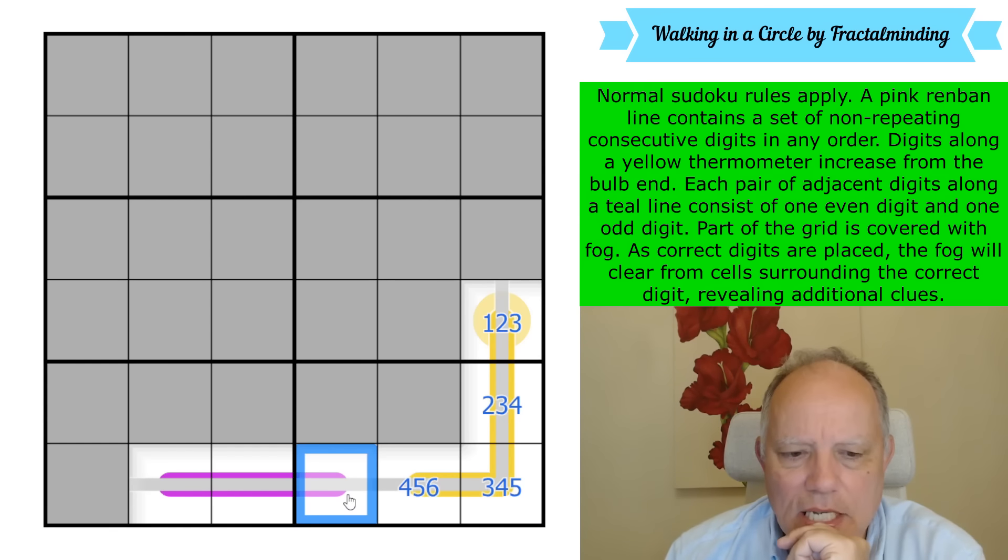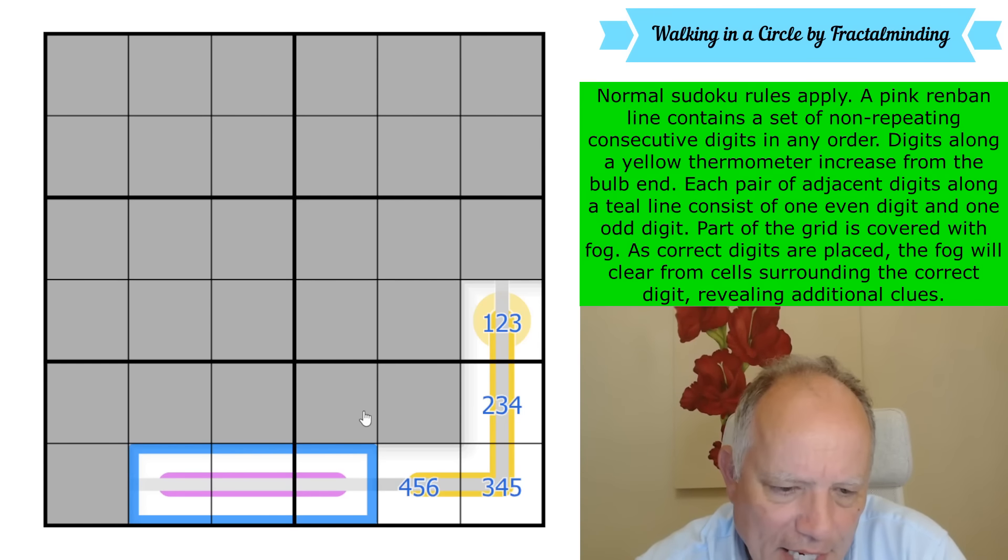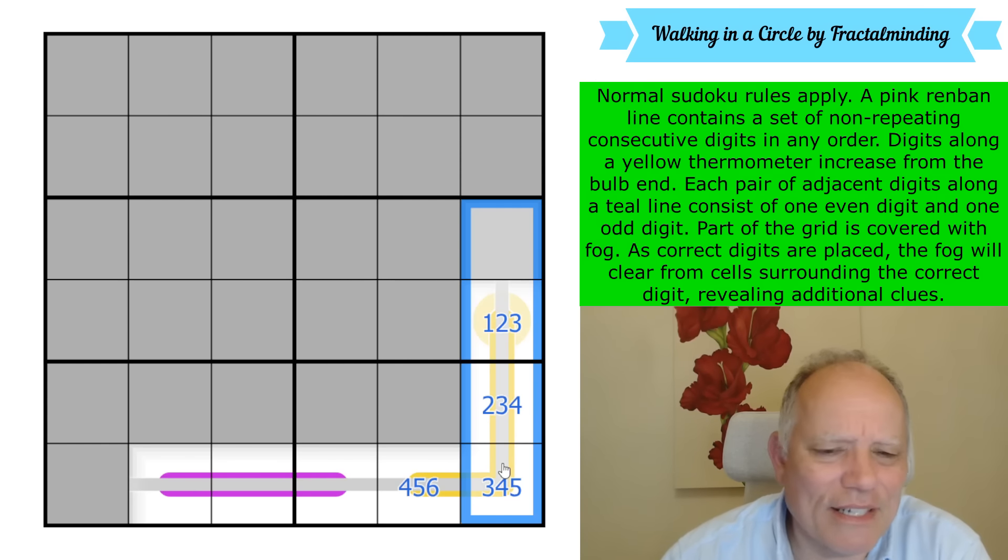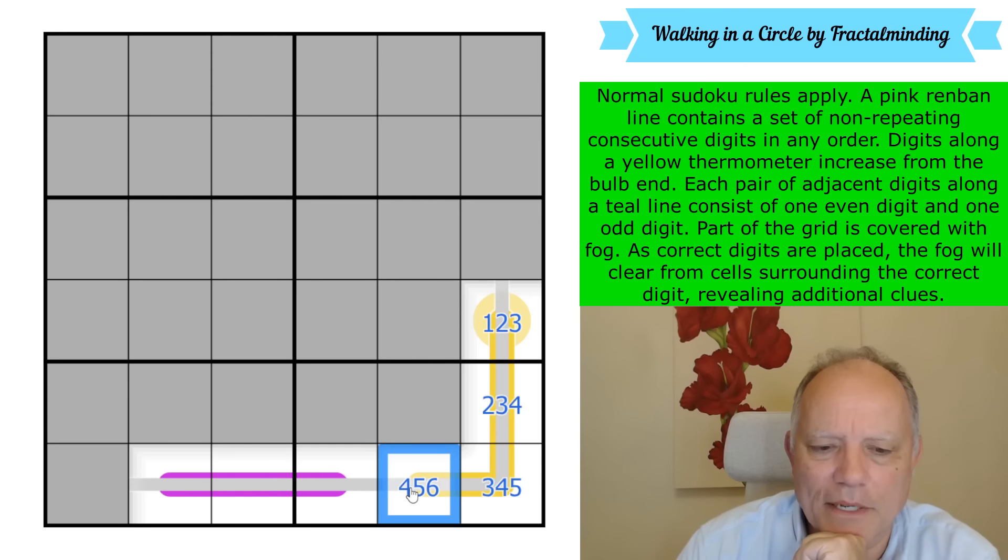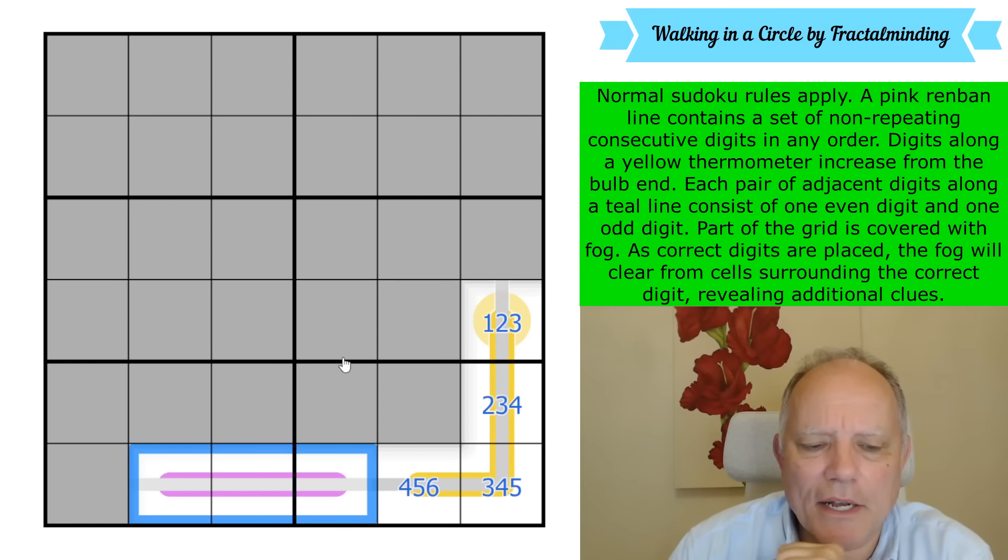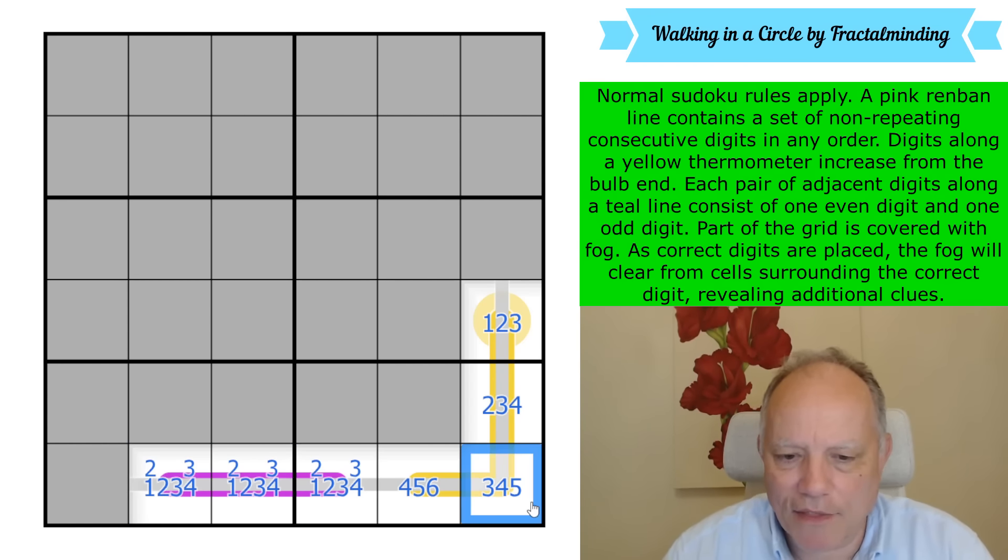Let's use these candidate markings of three, four, five and four, five, six to determine that this line, which originally had four possibilities, has two of those ruled out. One that's ruled out is six, five, four because it would break this cell. One that's ruled out is five, four, three because it would break this cell. So this line either contains two, three, four or one, two, three, and it definitely contains the digits two and three.